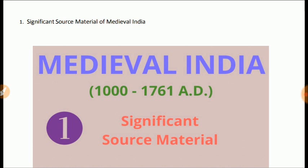The Medieval India rulers employed court historians in order to maintain records of their activities in a systematic way. They mostly stressed political events, but in works of the following significant writers, we get stray references to cultural history also. Archaeological records and various texts written in Turkish, Arabic, Hindi, and Sanskrit are also significant source material for knowing the history of the contemporary period.